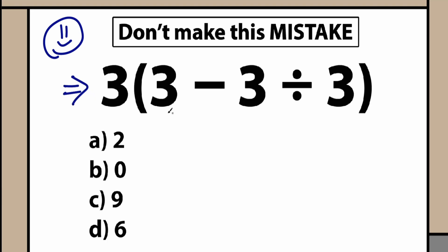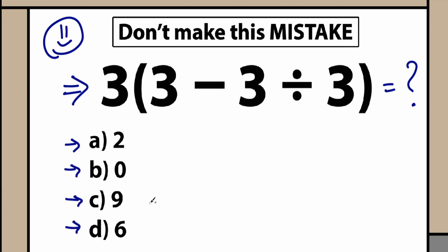You can see this question in the middle of the screen here. We have three times, we have parentheses, 3 minus 3 divided by 3. Of course we need to solve this question. So right now we have four options: option A, option B, option C and option D. So choose one option — what do you think is the correct answer to this question?